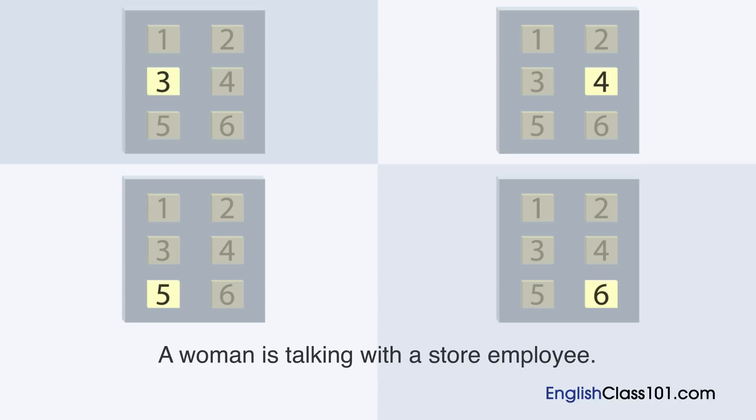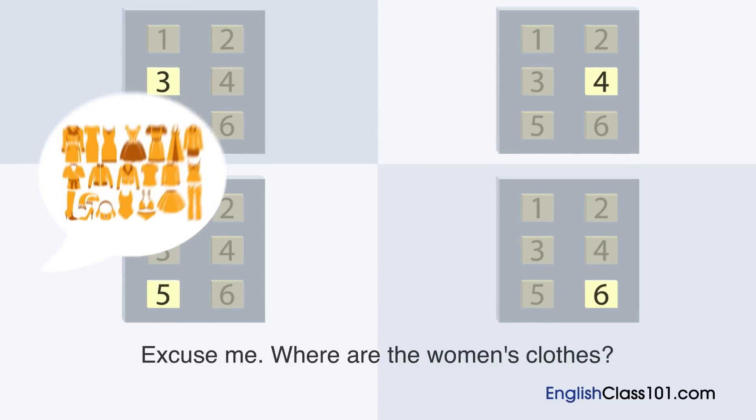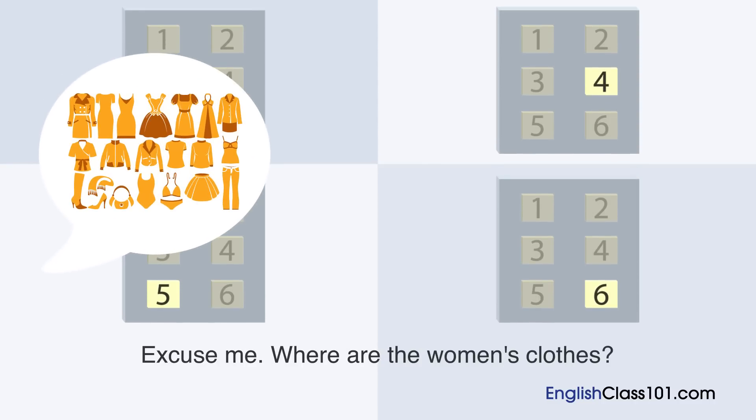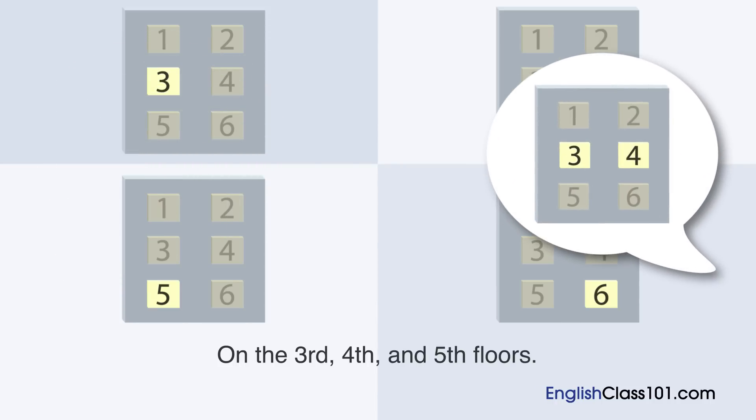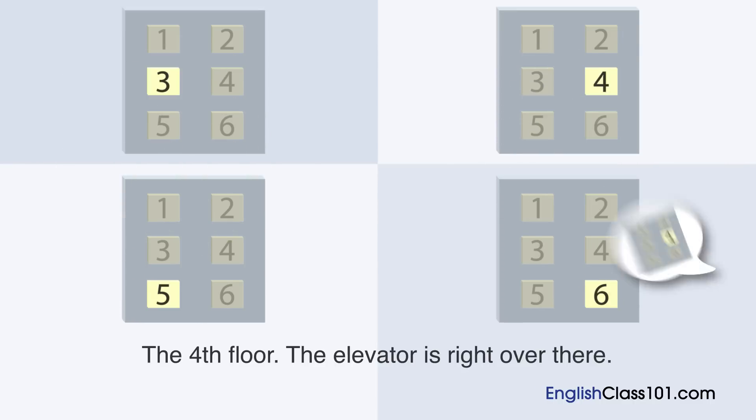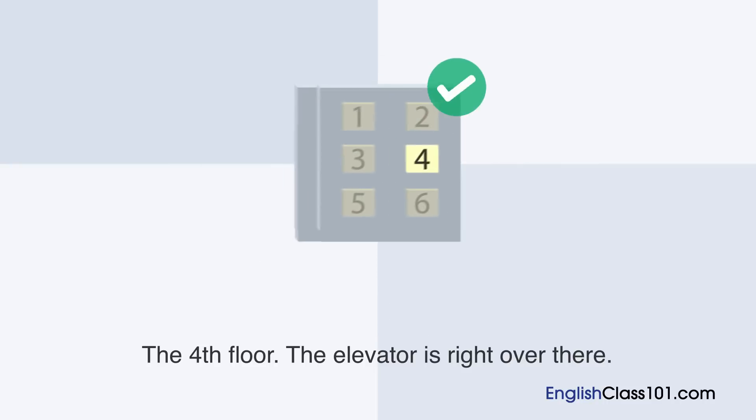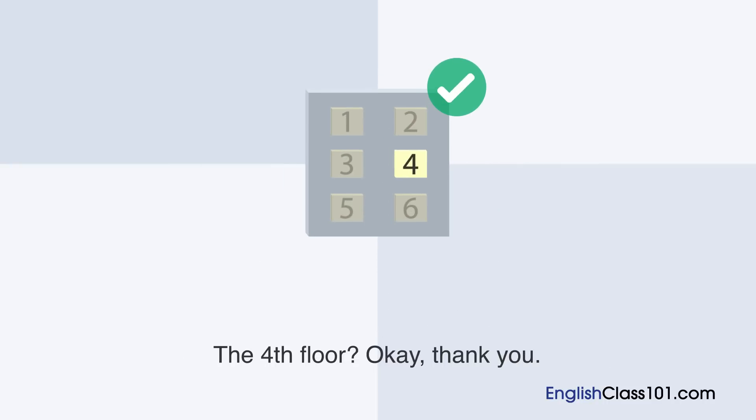A woman is talking with a store employee. Which floor is the woman going to? Excuse me, where are the women's clothes? On the third, fourth, and fifth floors. Which floor has coats? The fourth floor. The elevator is right over there. The fourth floor? Okay, thank you.